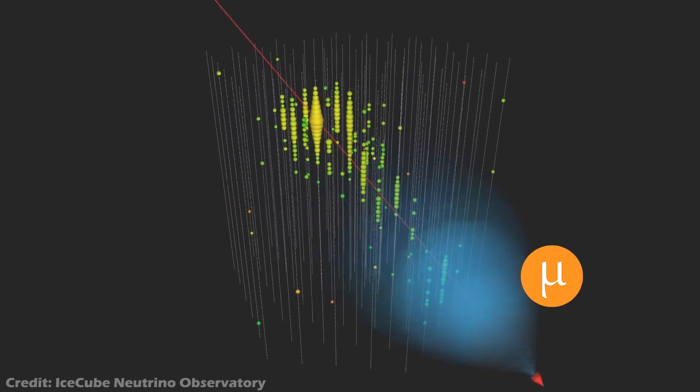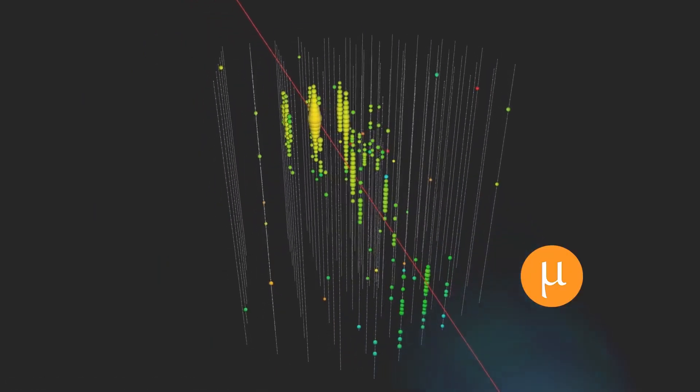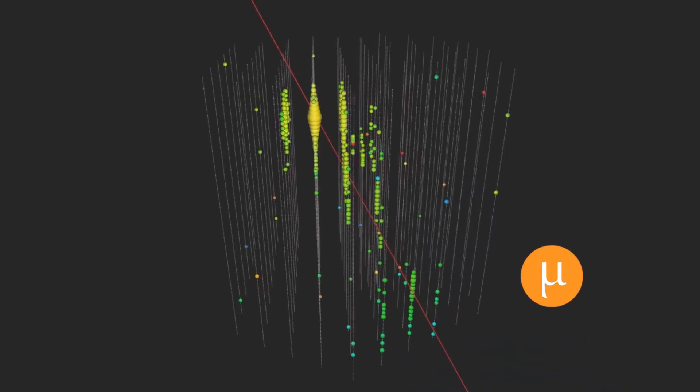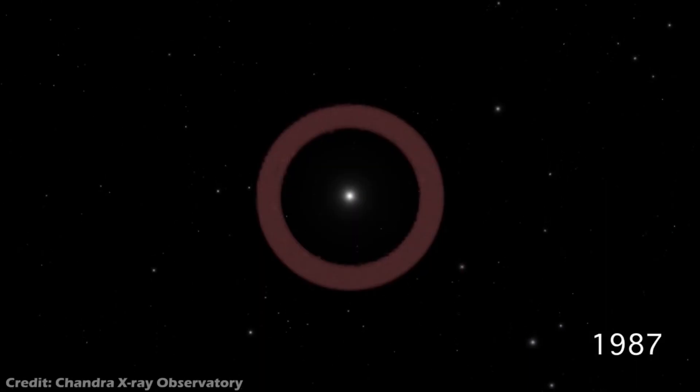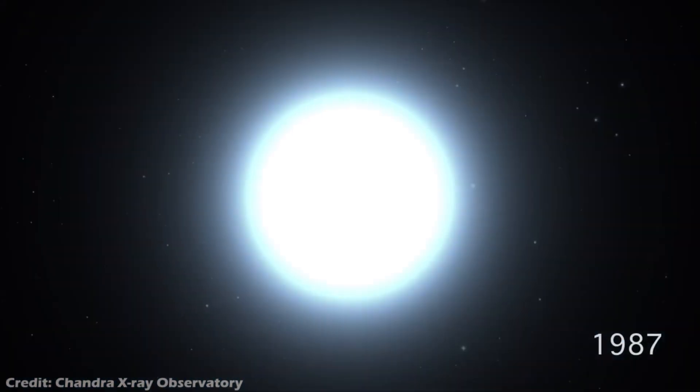This was likely due to neutrino emission which occurs simultaneously with core collapse, but before the visible light is emitted. Visible light is transmitted only after the shockwave reaches the stellar surface.